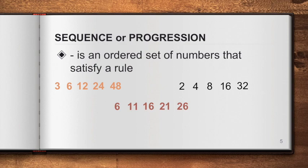What about 6, 11, 16, 21, and 26? From 6, which is your first number: 6 plus 5 gives 11, plus 5 again is 16, plus 5 gives 21, and 21 plus 5 equals 26. So the rule is adding by 5 — that is the rule for this sequence.